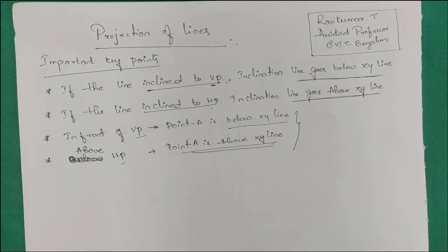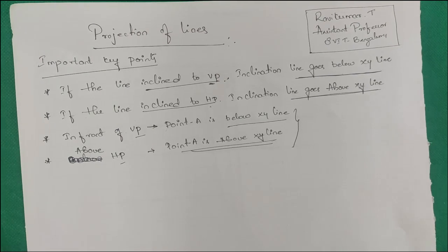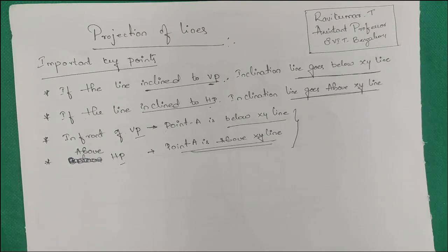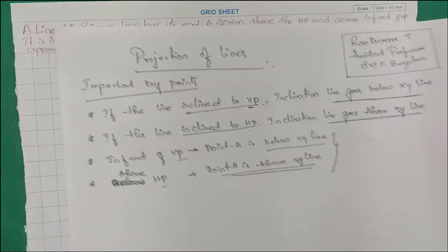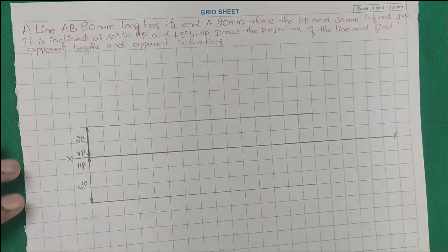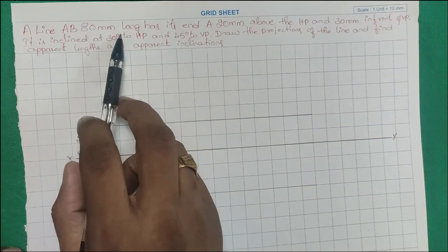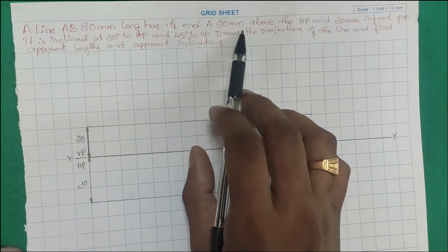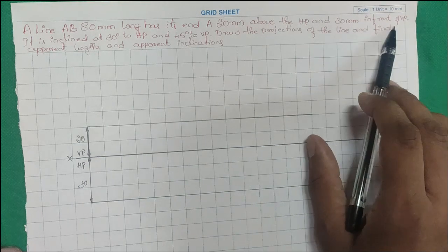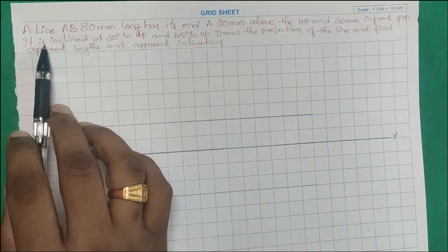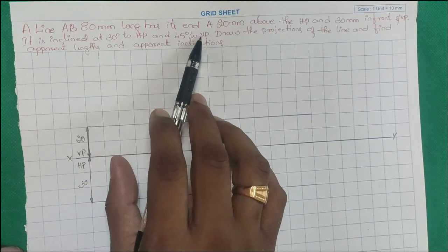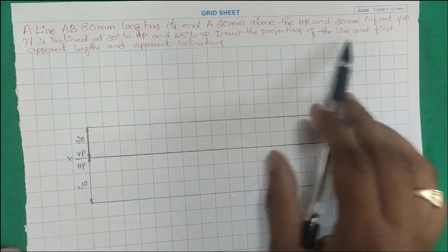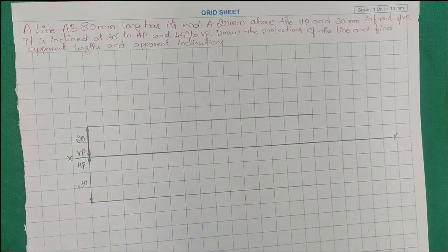We are going to solve problems in the first quadrant, which means in front of VP and above HP. The first problem: a line AB is 80 mm long. Its end A is 20 mm above HP and 30 mm in front of VP. It is inclined at 30 degrees to HP and 45 degrees to VP. Draw the projection of the line and find the apparent length and apparent inclinations.